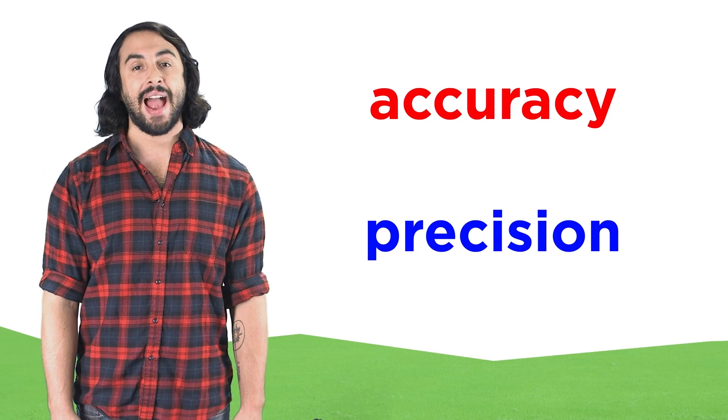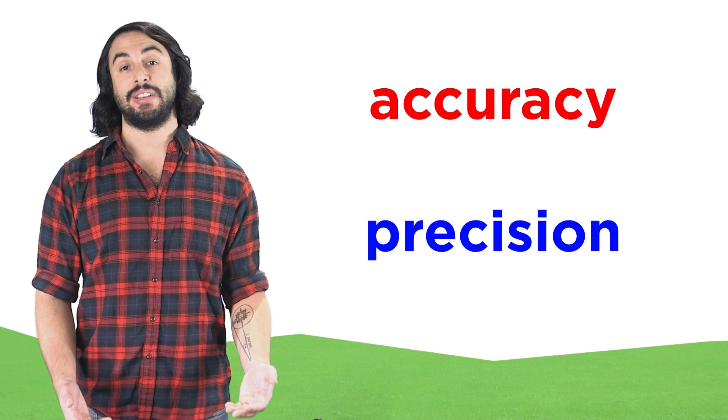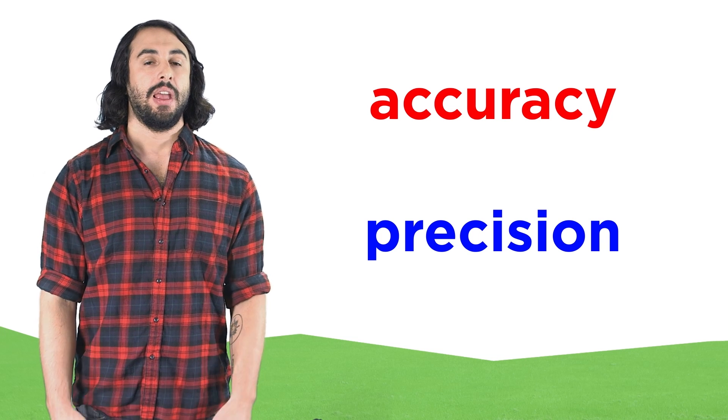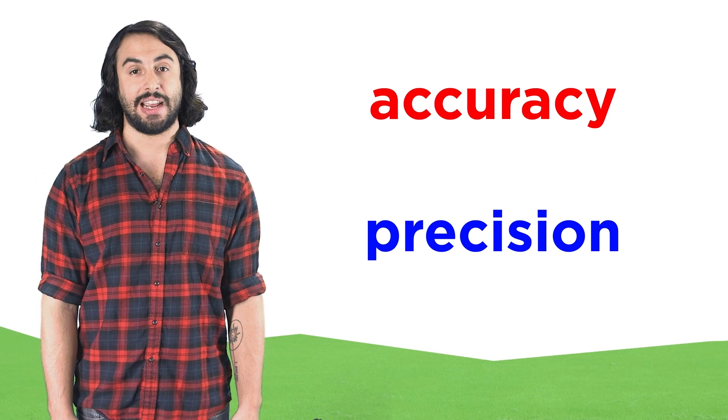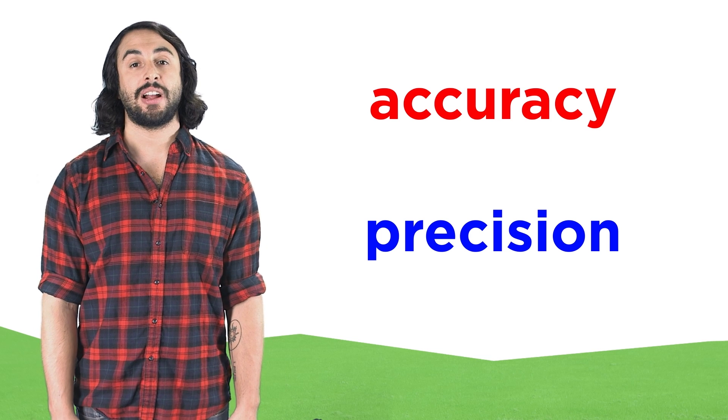At any rate, accuracy and precision are important concepts to understand, because as we said, measurement is the way we collect data, and the interpretation of this data is what science is really all about. Let's check comprehension.